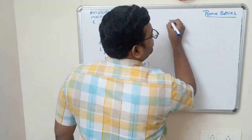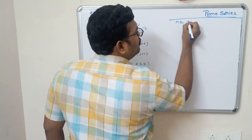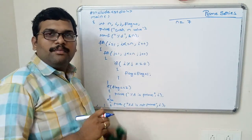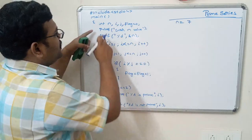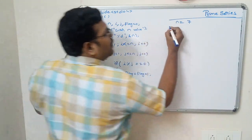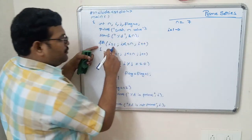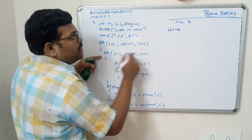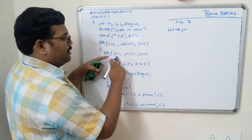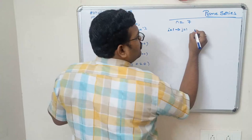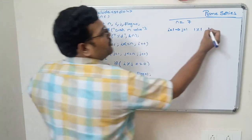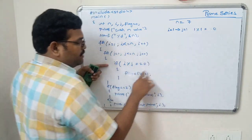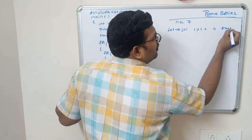Let us trace the program with n equals 7. We need to find all prime numbers between 1 and 7. For i equals 1, the control enters the loop. Then j equals 1, and 1 mod 1 equals 0, so the condition is satisfied and flag will be 1. Then j is incremented to 2, and 2 less than or equal to 1 fails, so control exits the inner loop.